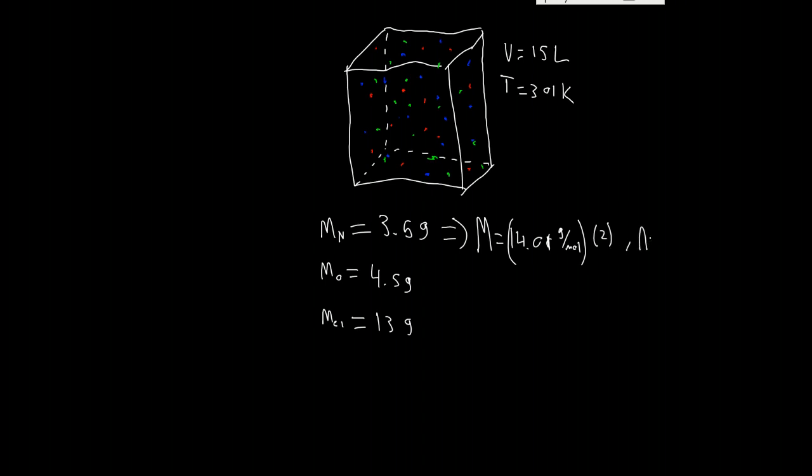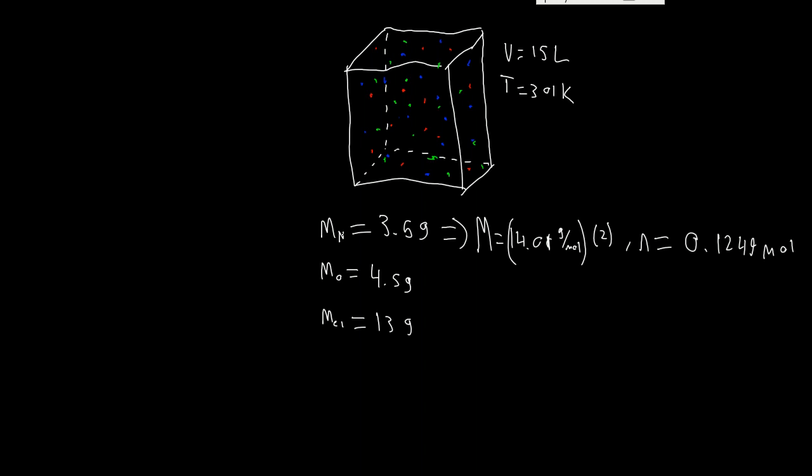And so, number of moles, we're going to be dividing 3.5 grams. So, 3.5 is going to be divided by 14.01 grams times 2 moles. We're going to get 0.1249 moles. So, that's the number of moles of nitrogen.